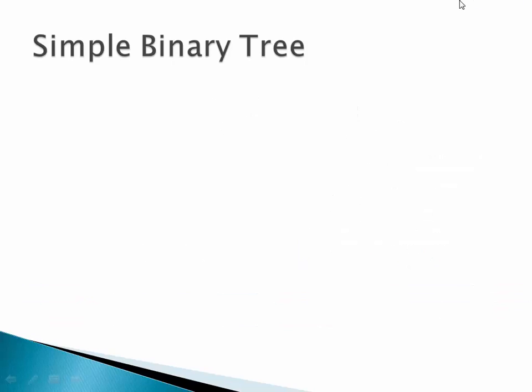What I'm going to start off with is a really simple example — a binary tree data structure, just a plain old basic binary tree. I want to make sure it's clear that this is not part of the template method, strategy, or null object pattern. I'm just using it as a convenient data structure to work with.